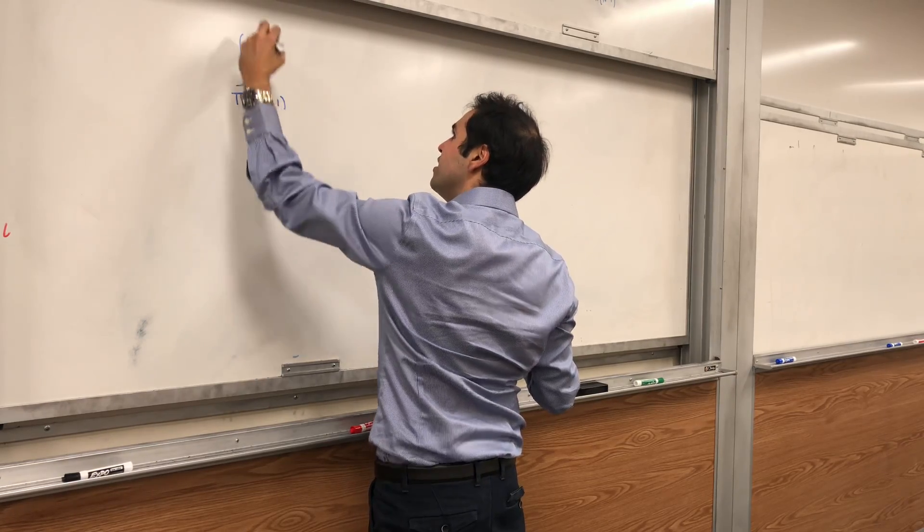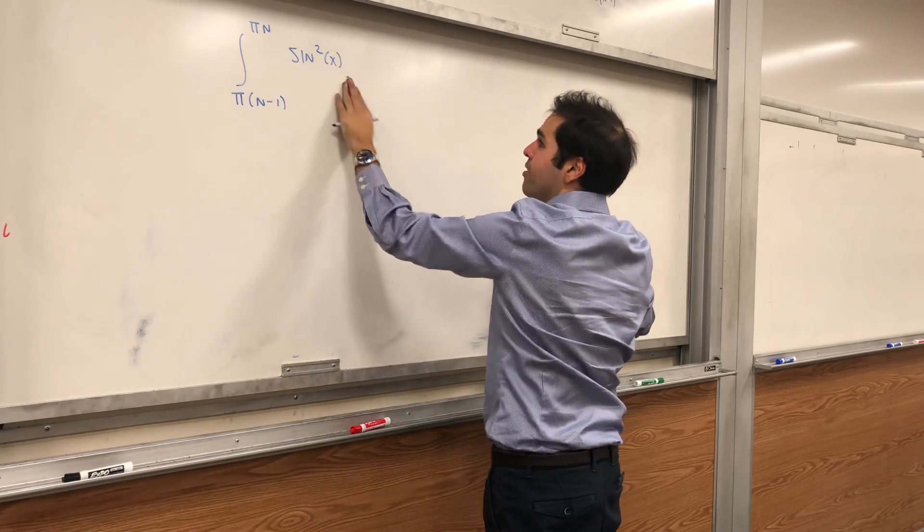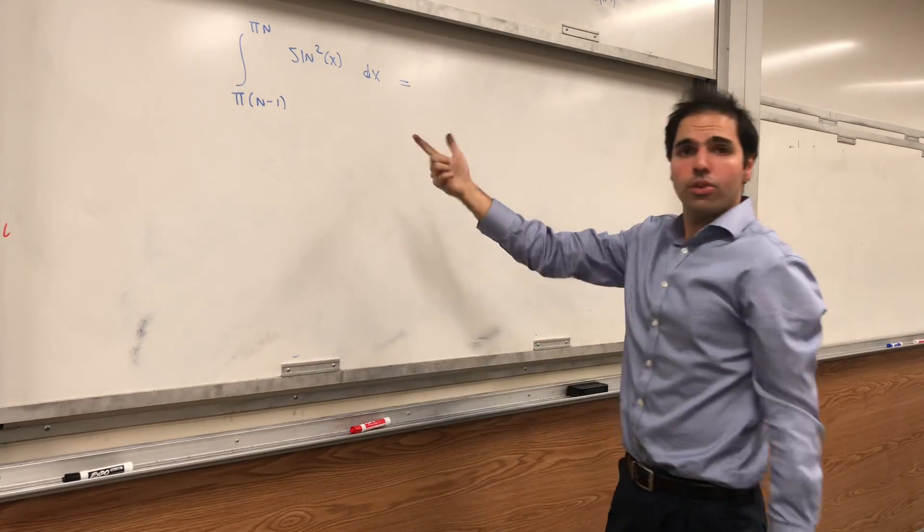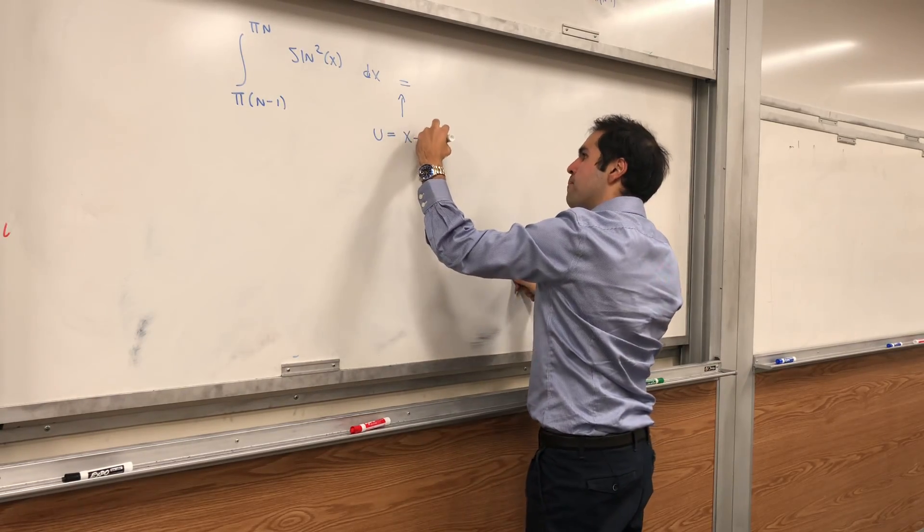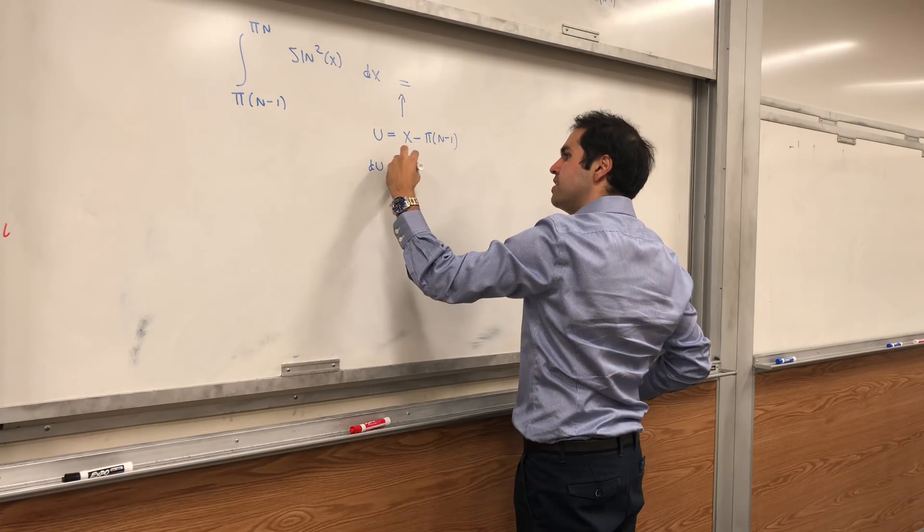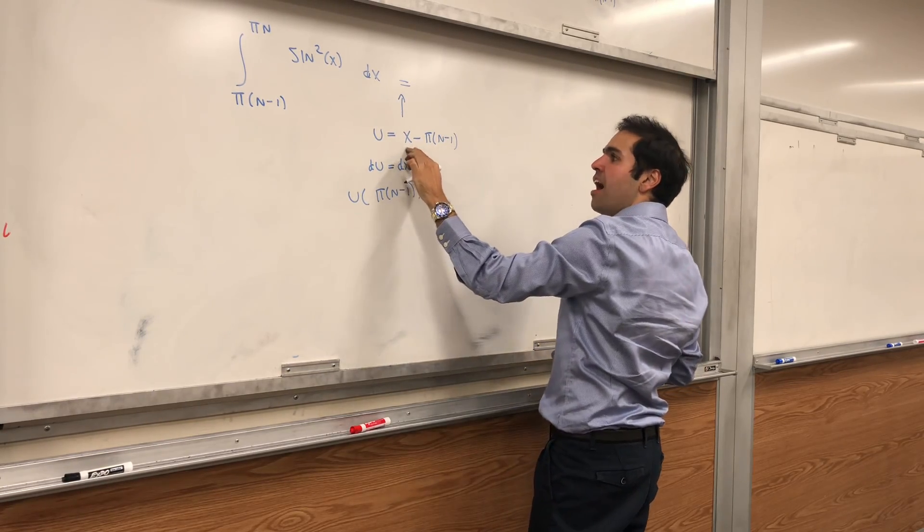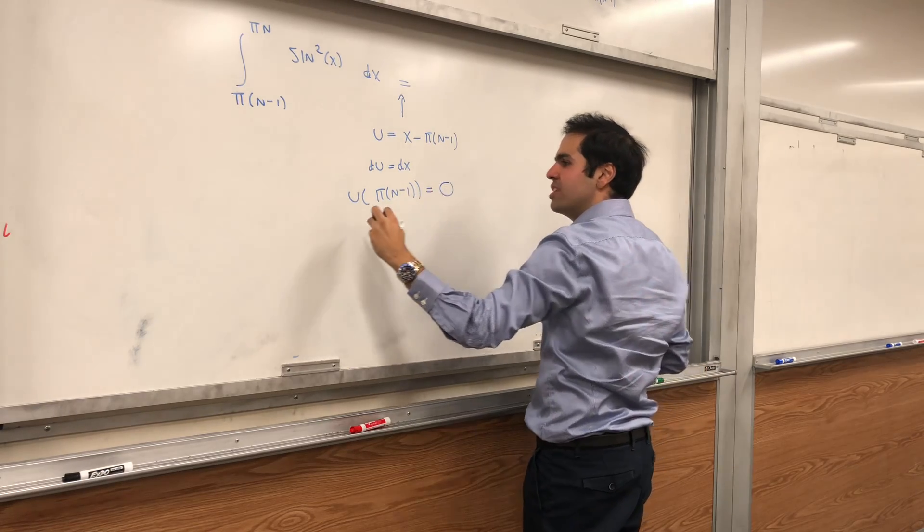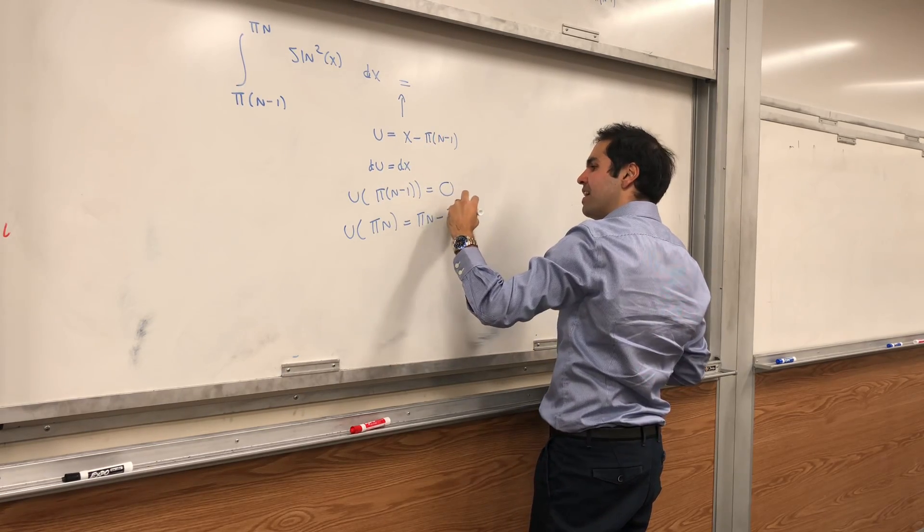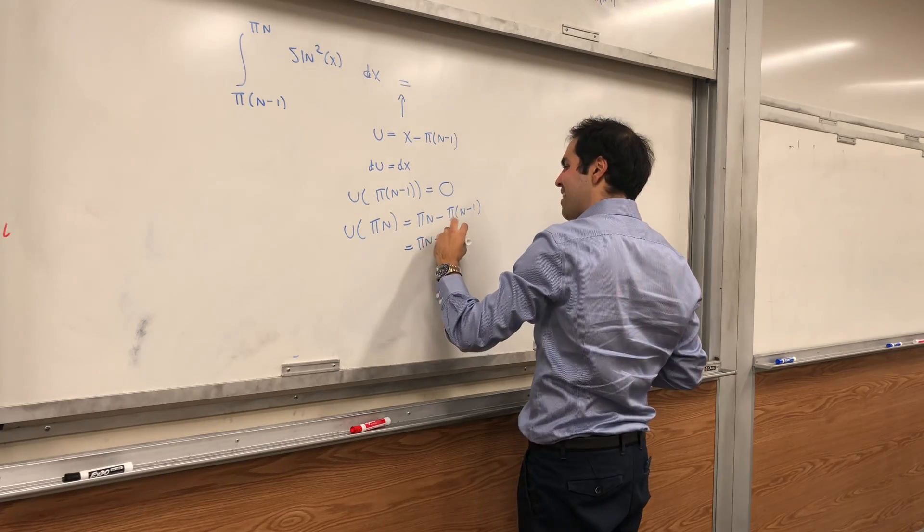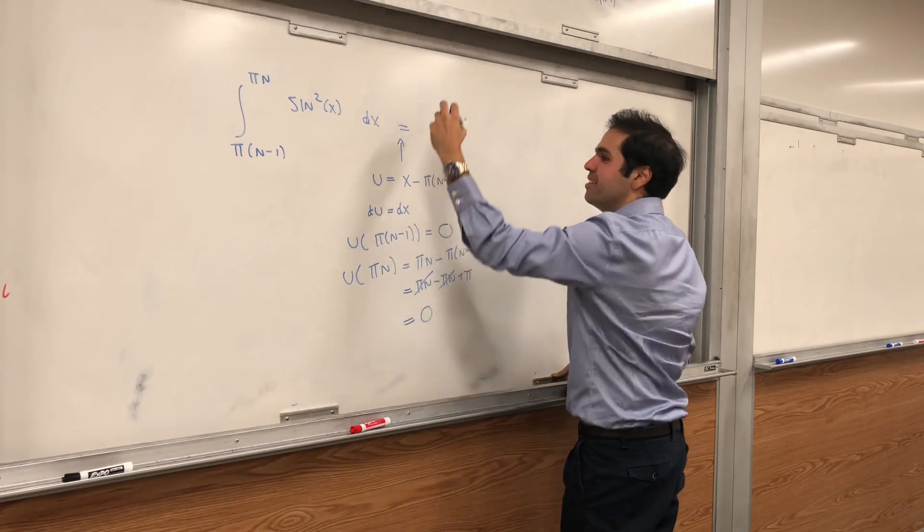Consider pi n minus 1 to pi n, sine squared of x dx. And now let's use a quick u-sub. Let u be x minus this chunk, pi n minus 1. Well, then du is dx, and u of pi n minus 1 is 0. And u of pi n is pi n minus pi n minus 1, so it's pi.